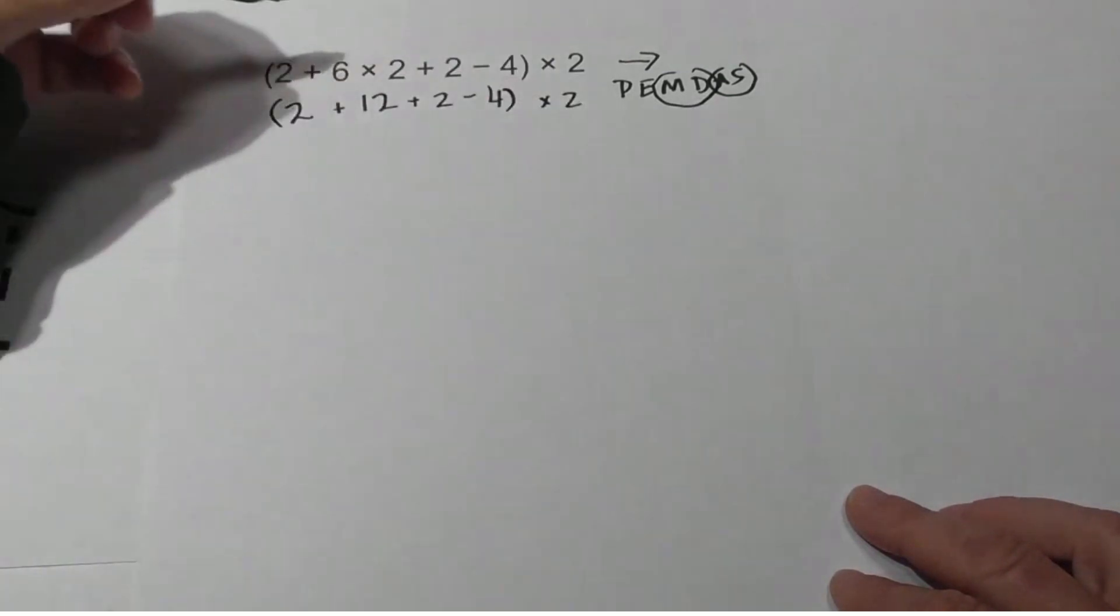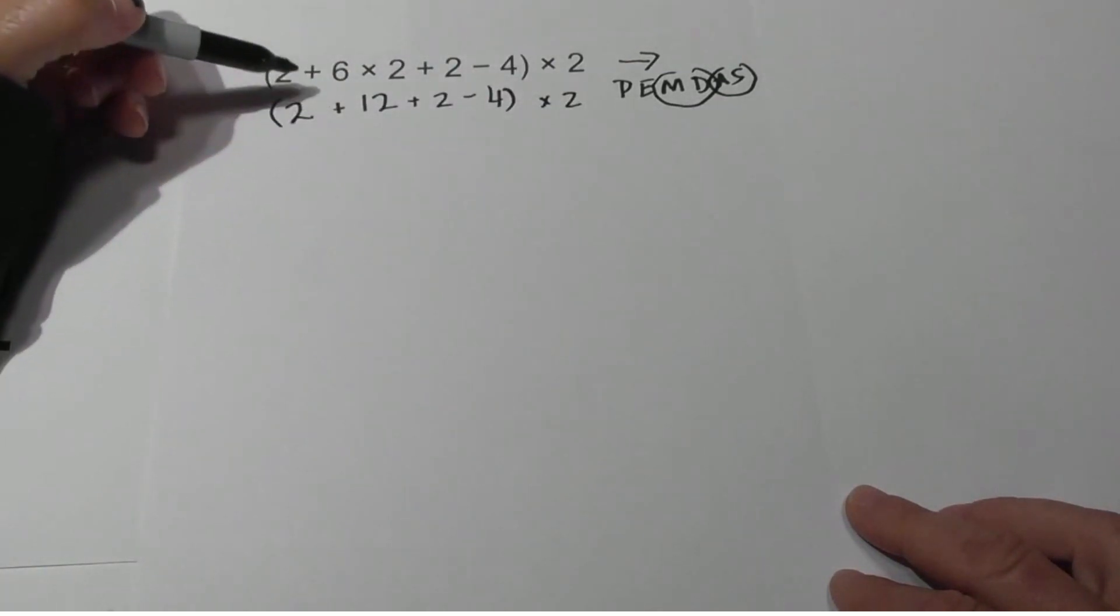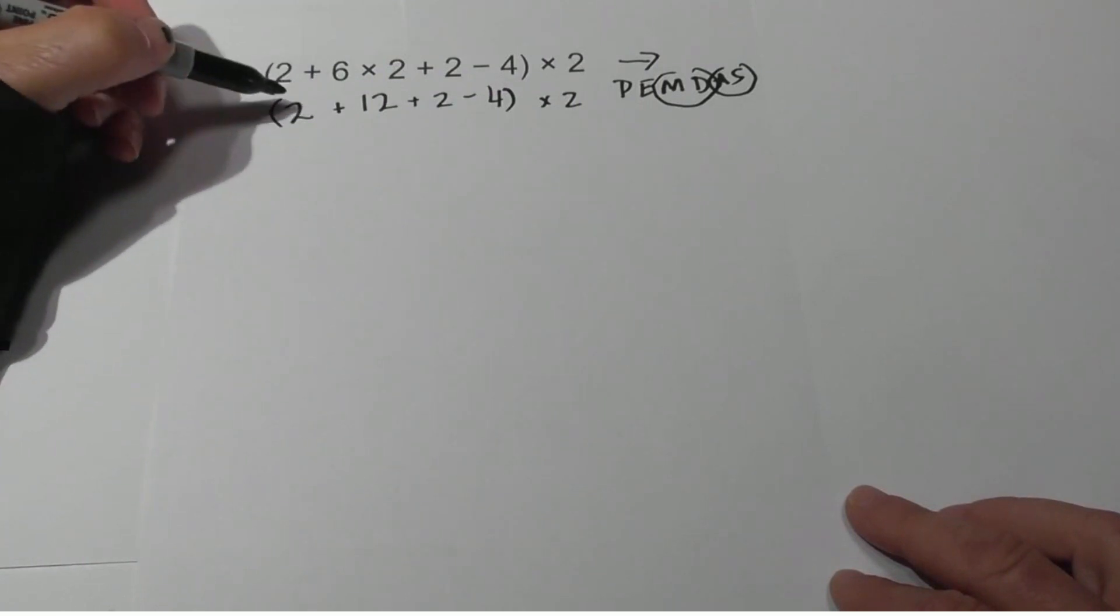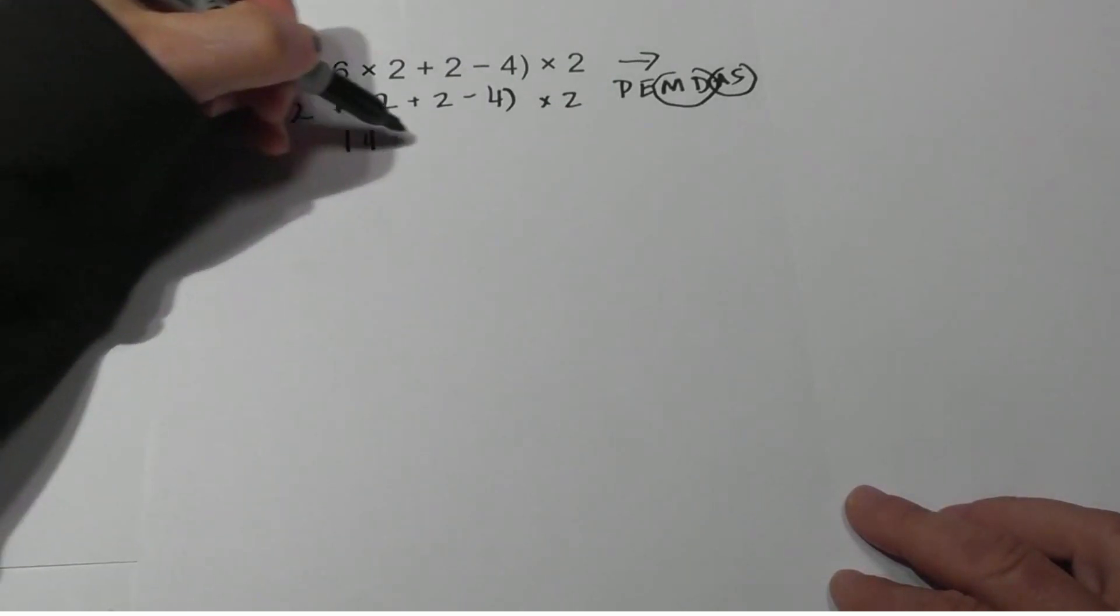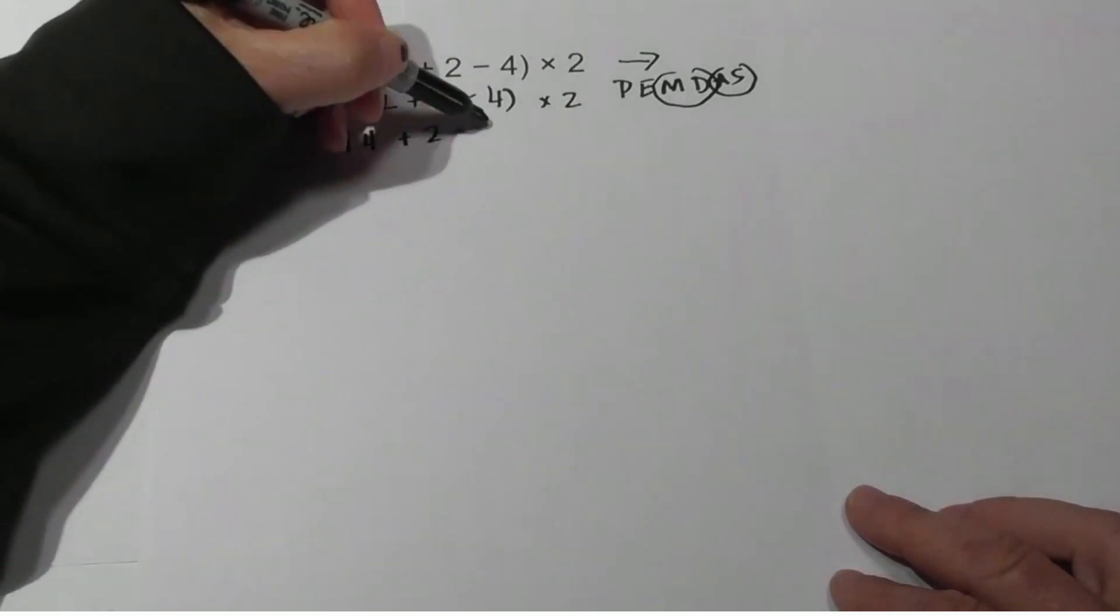Now let's start. Do we have parentheses? Exponents? No. Do we have multiplication? No. Do we have adding and subtracting? Yes. So I go left to right. 2 plus 12 is 14. I'm going to bring everything down.